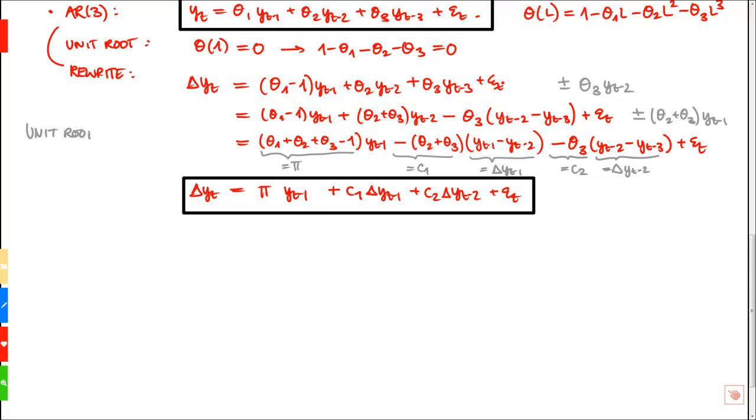We have a unit root in the original model if 1 minus theta1 minus theta2 minus theta3 equals 0, which means minus pi equals 0, or equivalently pi equals 0. And this is exactly what we want to test. Note that this model could easily be extended to include more lags than 3. Then we would start with an AR(p) model, rewrite it exactly the same way, so we have on the left-hand side the change in yt, then we have the lag level with a coefficient of pi, and then we have p minus 1 lag first differences.